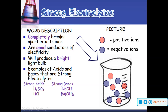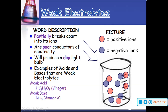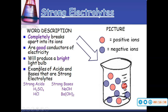Strong acids and bases are strong electrolytes. What makes them strong is that their ions completely ionize in the solution, which makes them good conductors of electricity. The positive charge and negative charge gives the electricity something to bounce off of, which enables your light bulb to burn very brightly. Examples include sulfuric acid, hydrochloric acid, sodium hydroxide, and barium hydroxide.